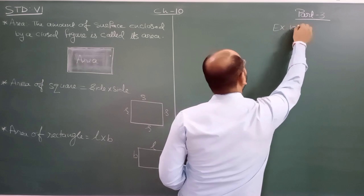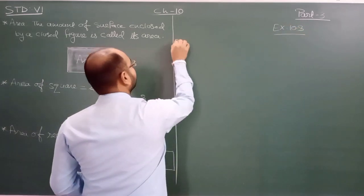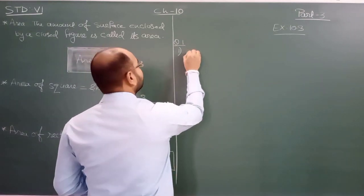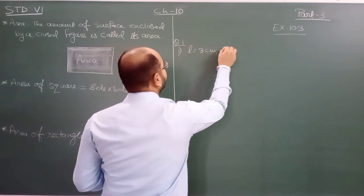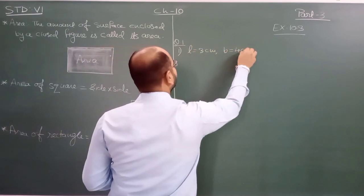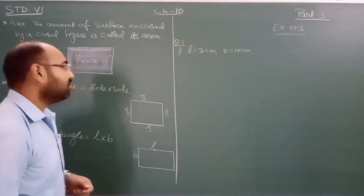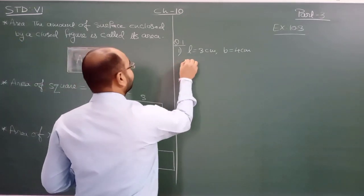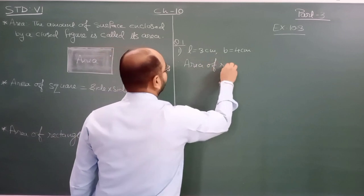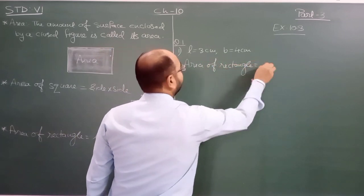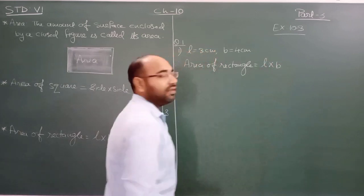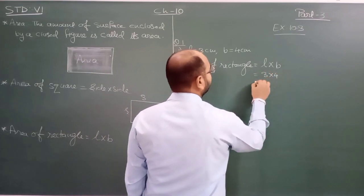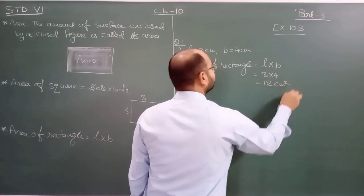Exercise 10.3, question number one: the sides are given as 3 centimeters and 4 centimeters. We take length equal to 3 centimeters and breadth equal to 4 centimeters. Therefore, area of rectangle equals length into breadth, which is 3 into 4, equal to 12 centimeters square.